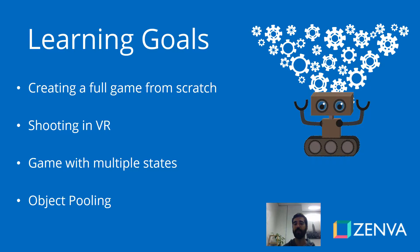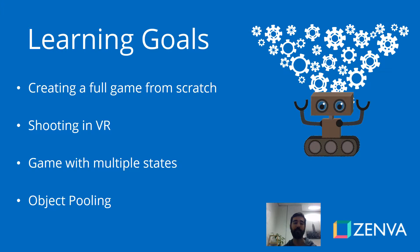At the end of the course, we'll also look at an optimization technique called object pooling, which is very important in Unity and in programming in general. You'll be using it a lot when you make games for virtual reality.